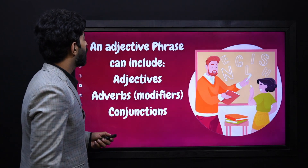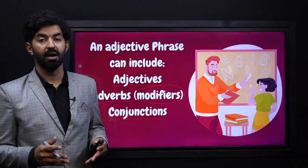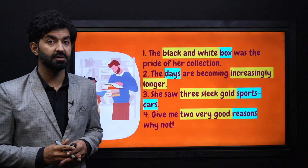Let's see what an adjective phrase includes: adjectives, then any adverb or modifier — because it is modifying the adjective — and then a conjunction. This is how you make any adjectival phrase.